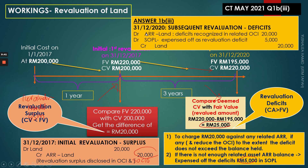So the required journal entry as at 31st December 2020 for the subsequent downward revaluation is: Debit Asset Revaluation Reserve — Land $20,000; Debit Revaluation Deficit (Profit or Loss) $5,000; Credit Land $25,000. That was the answer for question 1B3.